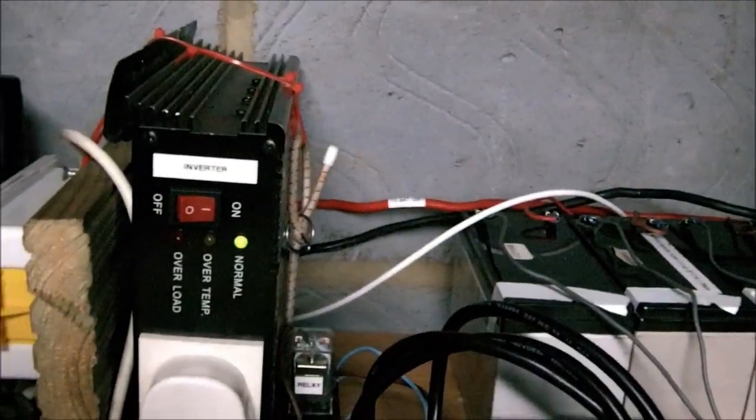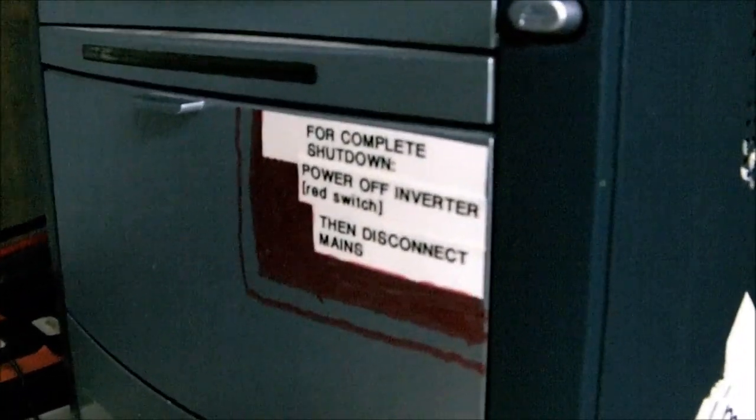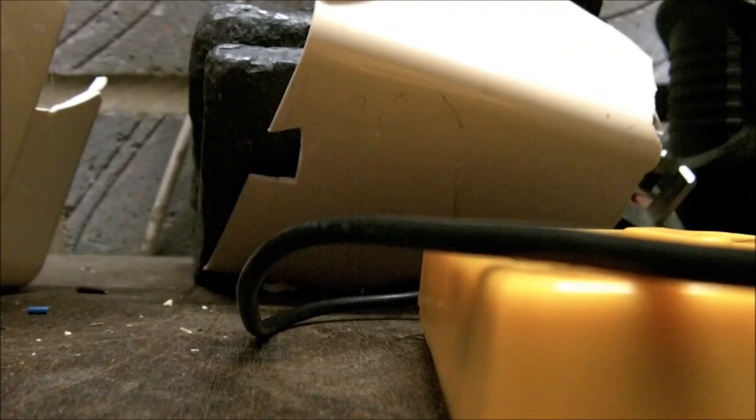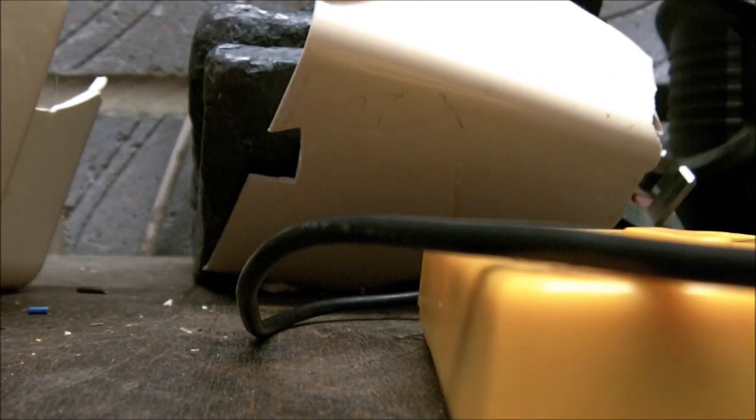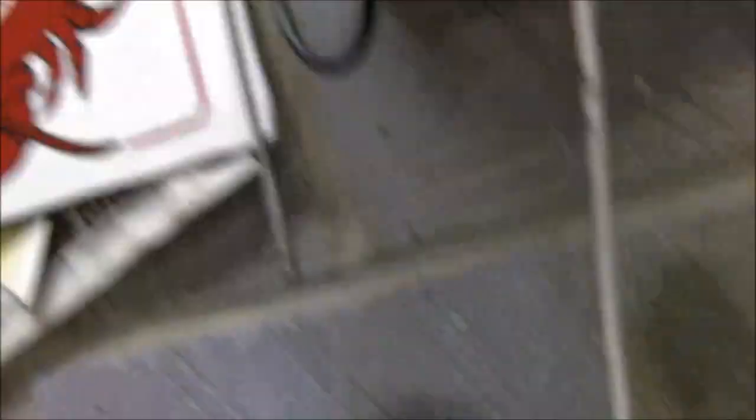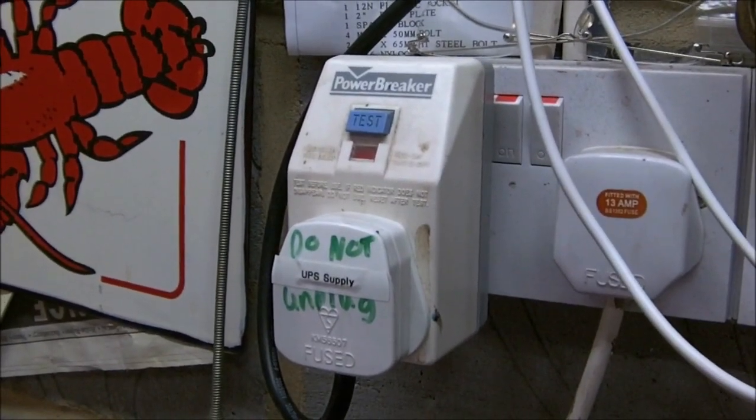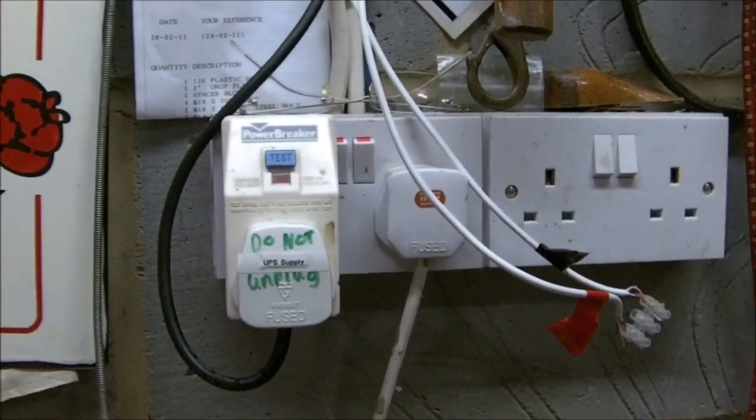Power off the inverter using that switch on the front. And then go downstairs and disconnect the mains supply. Just by unplugging that. Okay thanks for watching the video. Goodbye.